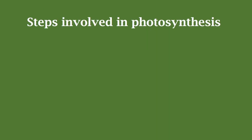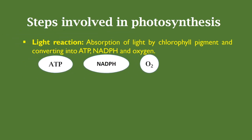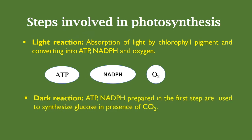There are two prime steps involved in photosynthesis. The first is the light reaction and the second is the dark reaction. The light reaction involves the absorption of light by chlorophyll pigment and converting it into ATP, NADPH, and oxygen. In the dark reaction, the ATP and NADPH prepared in the first step are used to synthesize glucose in the presence of carbon dioxide.